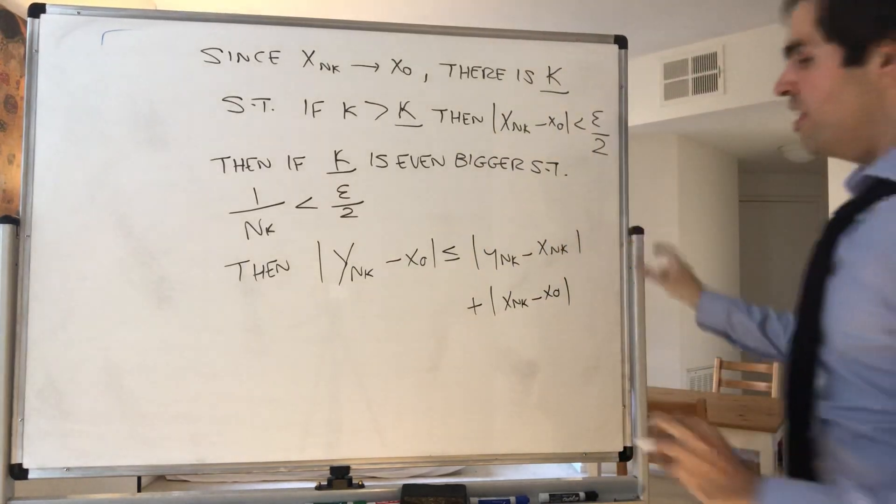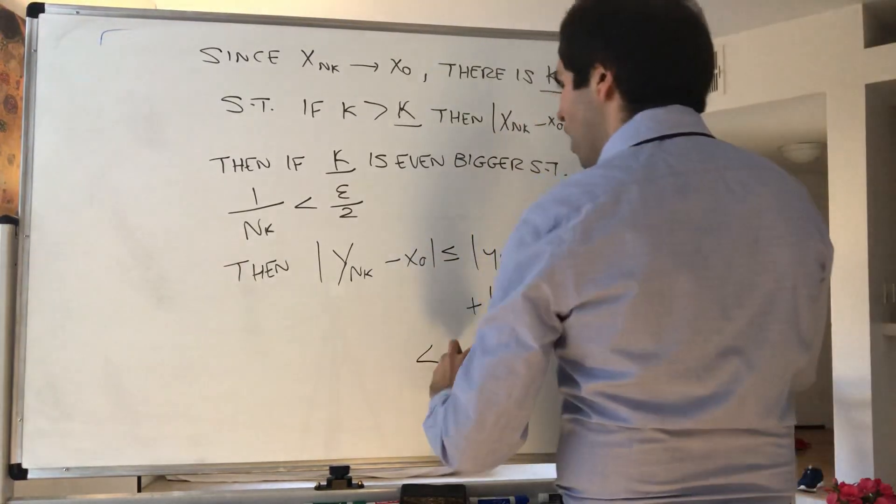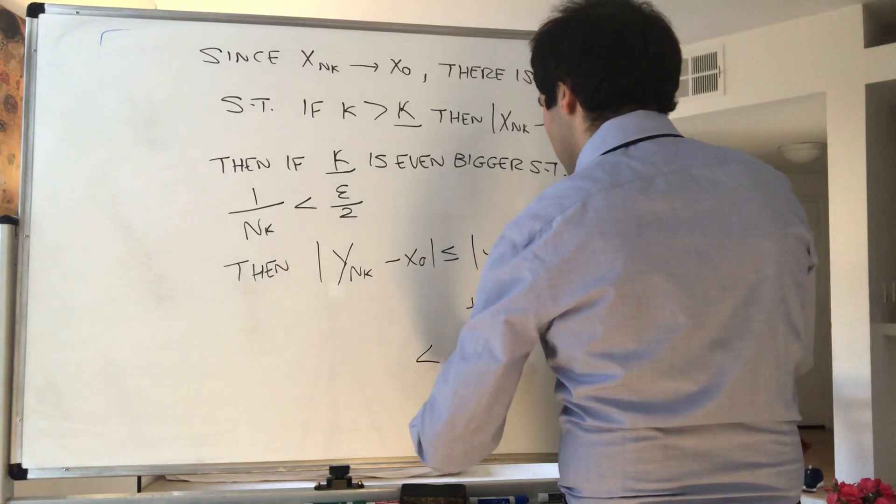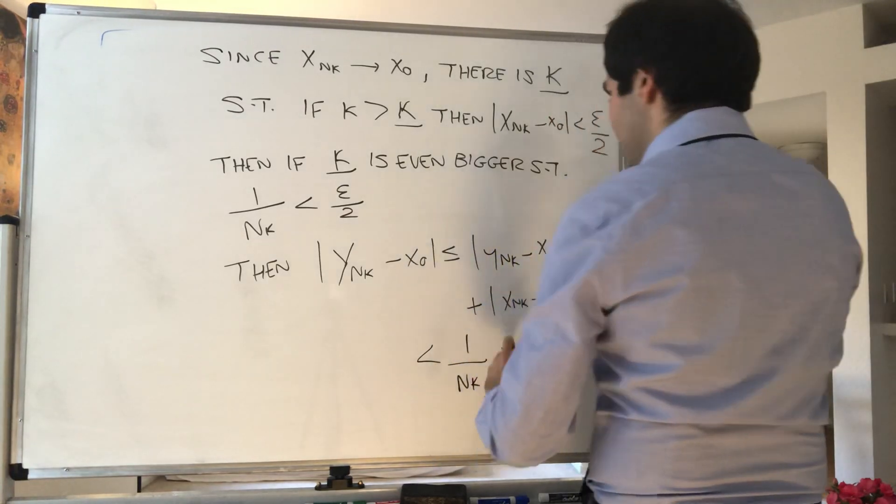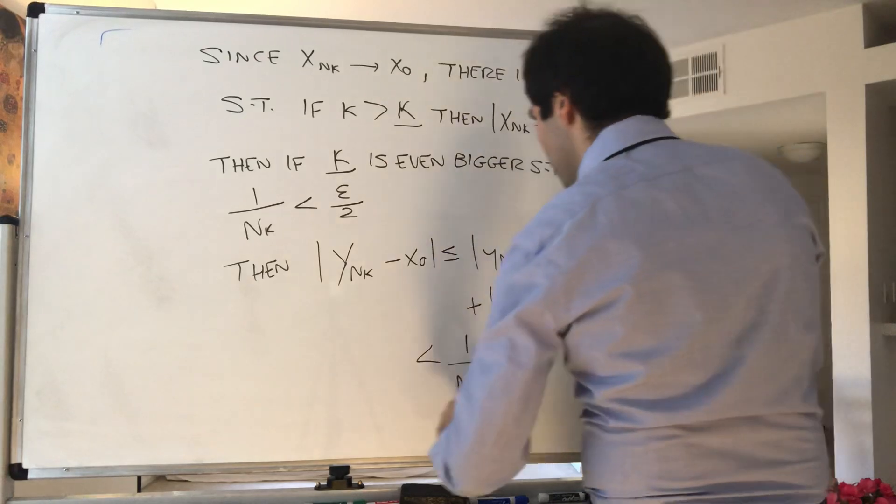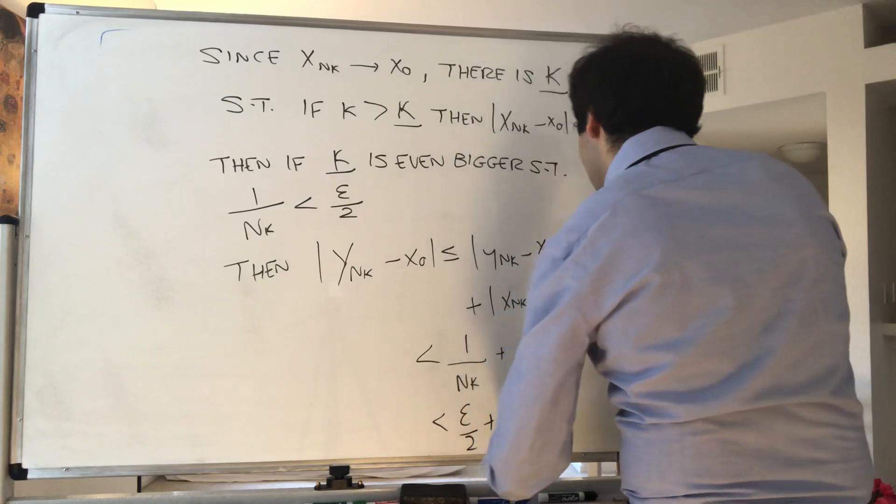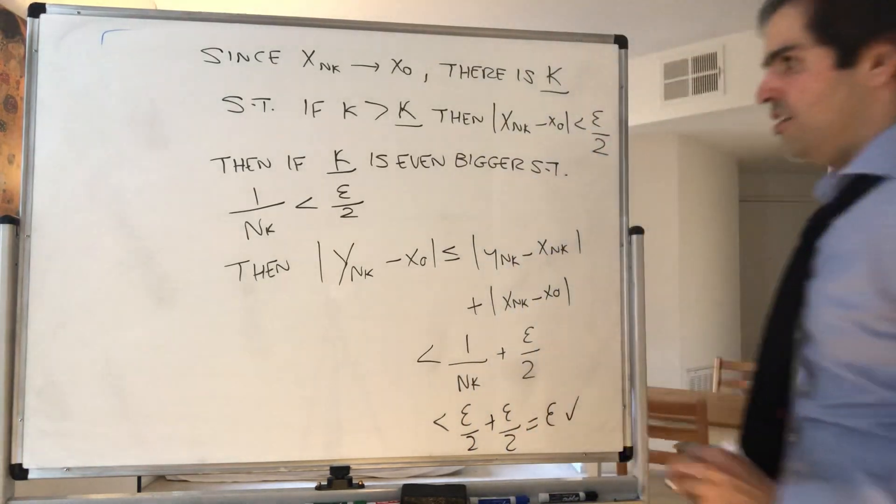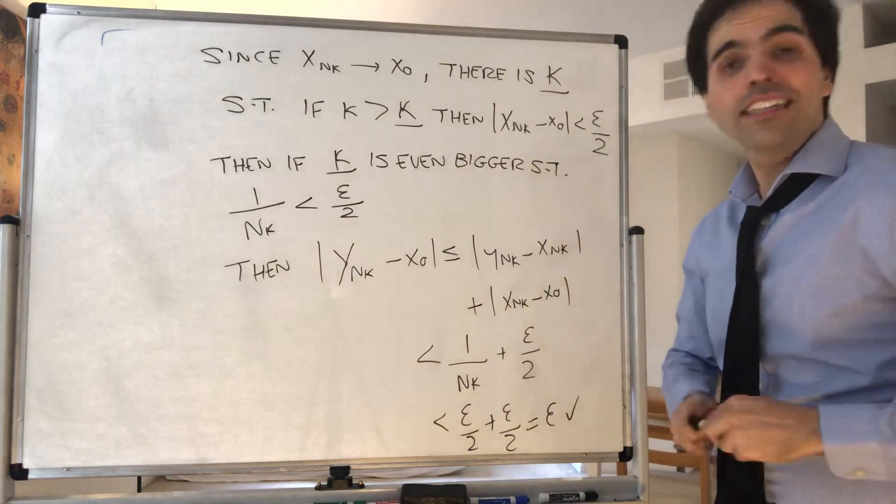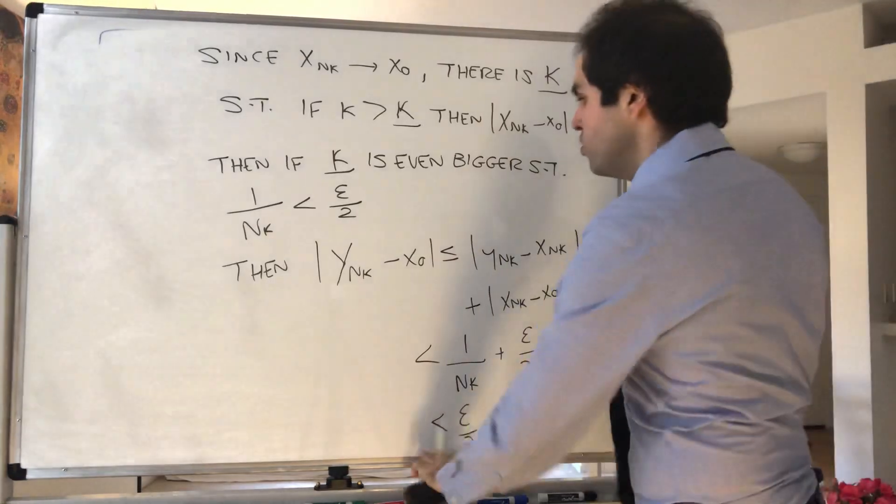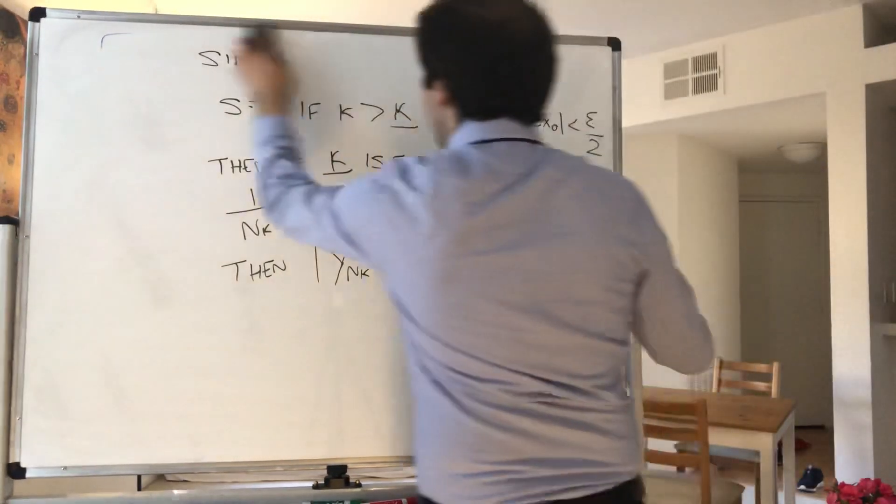But we know this is less than 1/nₖ, and this is less than ε/2. But now we chose 1/nₖ to be less than ε/2, and therefore at the end we get epsilon. So in fact, y_nₖ also goes to x₀, and that's a problem.